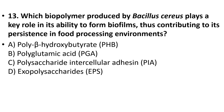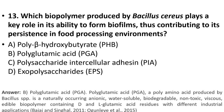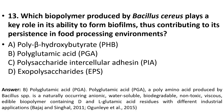Question 13: Which biopolymer produced by Bacillus cereus plays a key role in its ability to form biofilms, contributing to its persistence in food processing environments? Options: PHB, PGA, PIA, EPS. The answer is B, polyglutamic acid (PGA), a polyamino acid produced by Bacillus species — a naturally occurring anionic, water-soluble, biodegradable, non-toxic, viscous, edible biopolymer with various industrial applications.